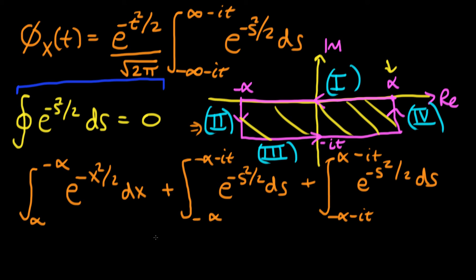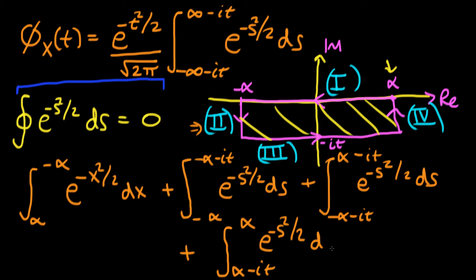The fourth part of the integral goes from α minus it back to α, where we began. Again, s has both real and imaginary components, so we write e^(−s²/2) ds. We know this entire closed contour integral evaluates to zero, and that's our starting point. Now I want to think about what happens to each component as α goes to infinity.